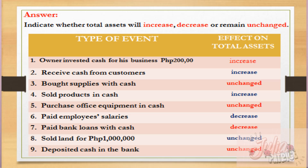Number eight: sold land for 1 million pesos. The effect on total assets is unchanged — the land, which is an asset, was replaced by cash worth 1 million pesos, so the asset is simply converted into cash and remains the same. Number nine: deposited cash in the bank. The cash is still there — it was just placed in the bank and did not leave the business — so the effect on total assets remains unchanged.